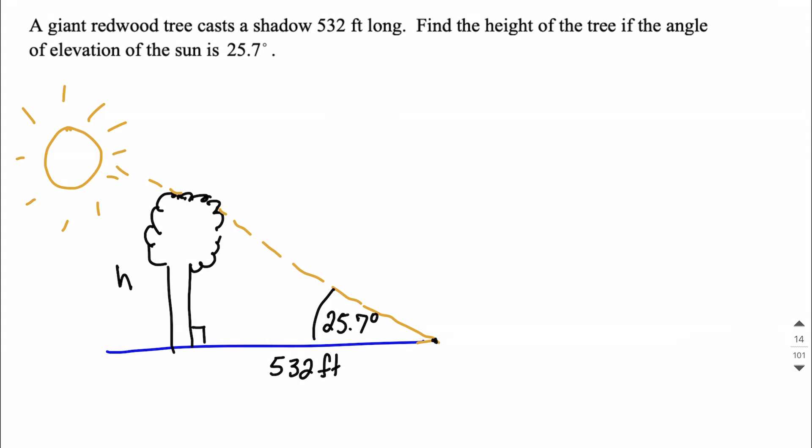Now, if I want to label this, I can label the h as across the triangle from our angle that we care about. So we call that the opposite side. And then the only other value we know is that 532. We would refer to that as being the adjacent side of our triangle.